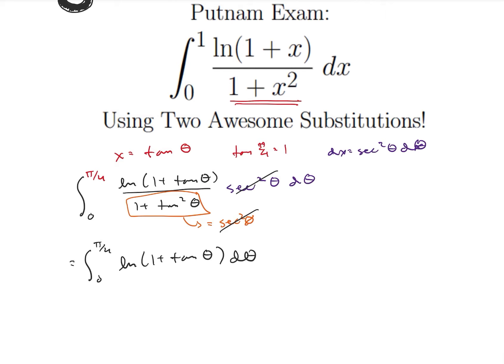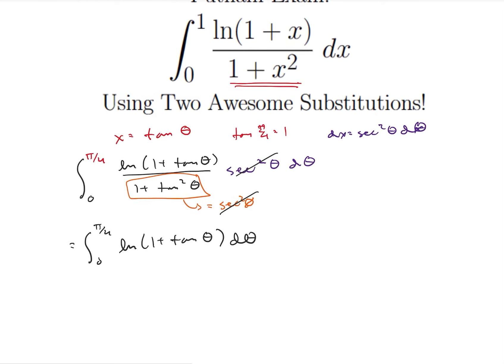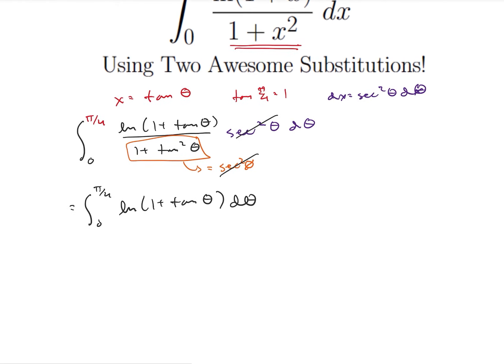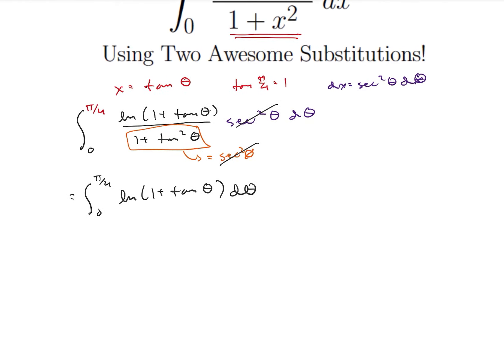This is where we get to our trick — this is why it's on the Putnam exam. It's very hard. We're going to do one more substitution that may make a little bit less sense. We're going to use theta equals pi over 4 minus theta.